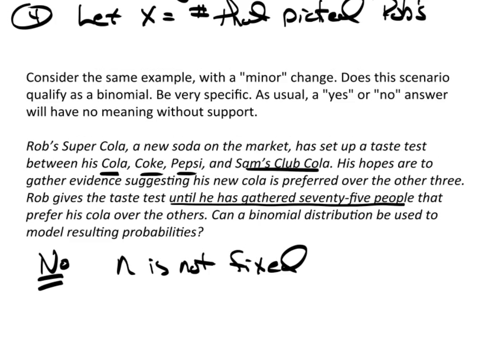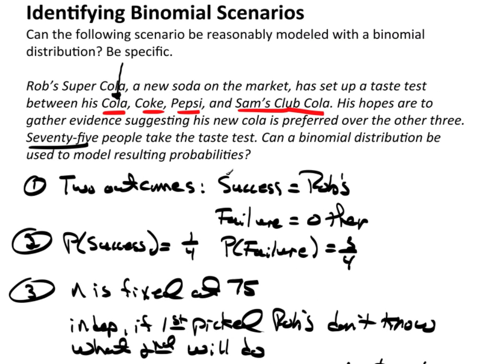This first scenario simply said they're going to test 75 people. They're going to randomly grab 75 people. N is fixed. That's it. Now we know N. And then when we're done, we can start figuring out whether or not they really like his soda better than others or not.